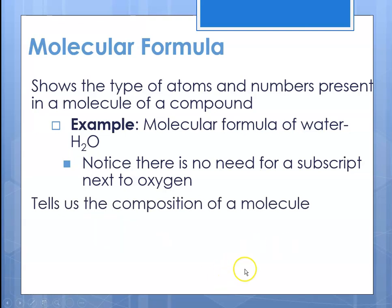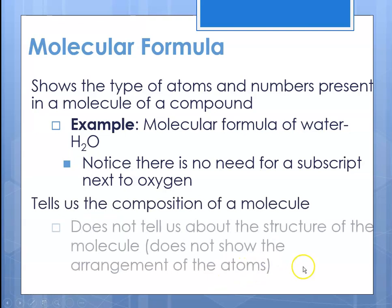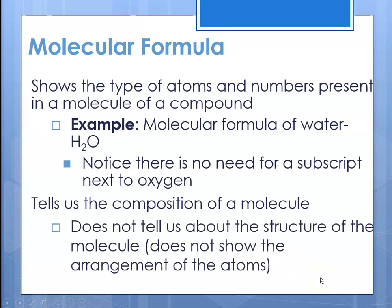The molecular formula tells us the composition of a molecule of a substance, but it doesn't tell us how the atoms are hooked together. A molecular formula tells you which types of elements and how many are present in a molecule, but it doesn't tell you the structure. For that, we need a different type of formula — we call those structural formulas.